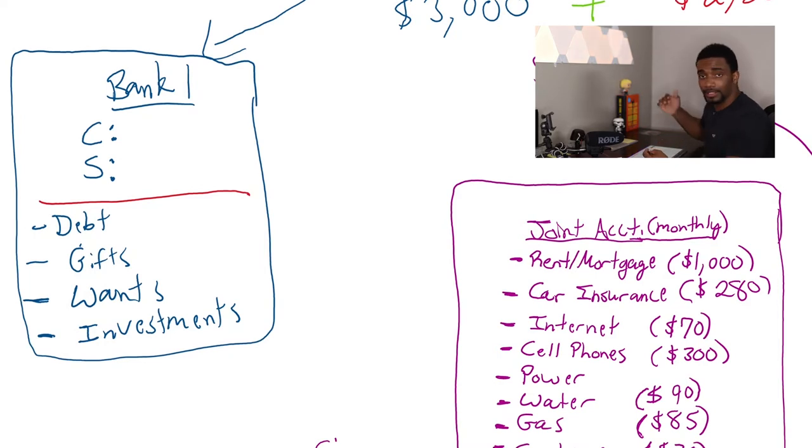And then within this, they have their own things that they're paying for. For example, their debt, their gifts to one another, their wants. So let's say spouse wants a new motorcycle or let's say he wants to get a haircut or let's say he wants to get a dog. Okay. That comes out of his expenses because they're his wants. Make sense?